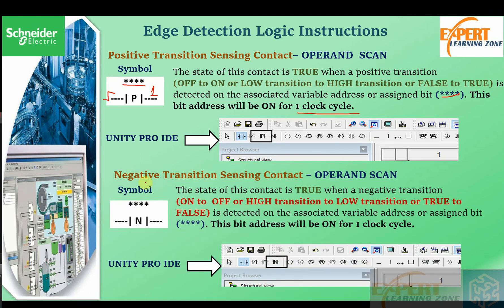Next is the negative transition sensing contact. This time we use N instead of P, which stands for negative transition. It is depicted as a normally open contact with an N inside, telling us it is a negative transition sensing contact.